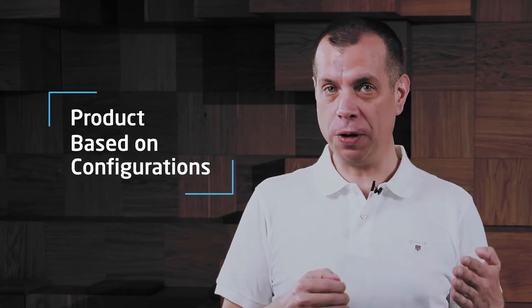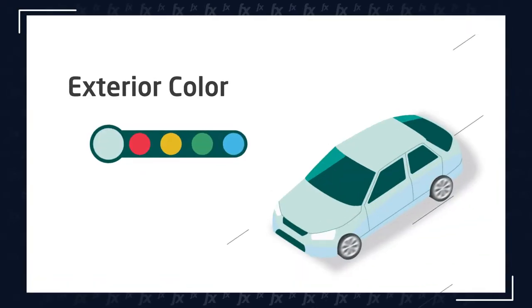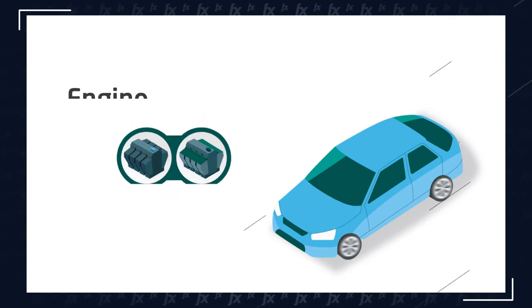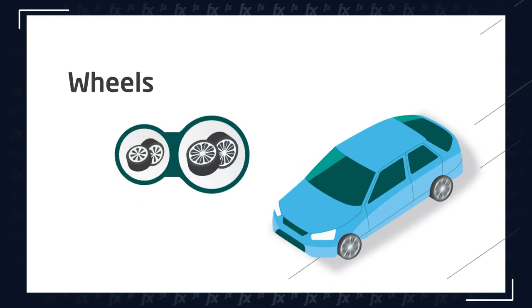A specific case where you can utilize CPQ software is when your products are based on configuration. Just imagine the situation when you are buying a new car — it's not just buying some universal car. Quite often you choose the color, the engine, and a lot of optional features. What CPQ makes sure is that if you select some optional features, it also verifies their compatibility with other optional features which must be followed.